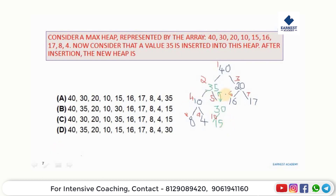After all swaps, the max heap is satisfied. The final array after inserting 35 into the heap is: 40, 35, 20, 10, 30, 16, 17, 8, 4, 15.